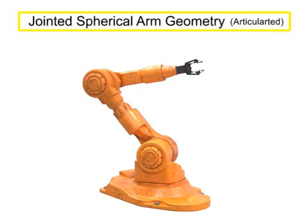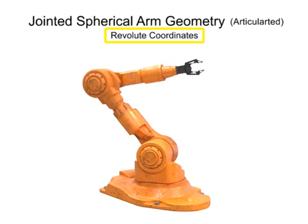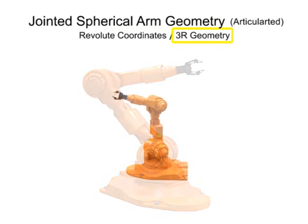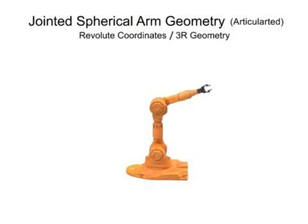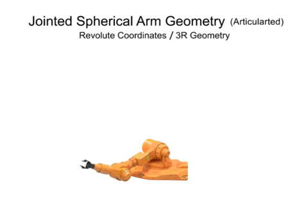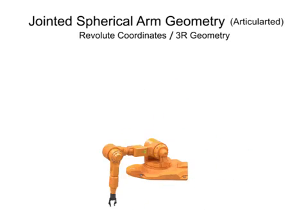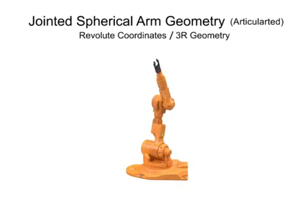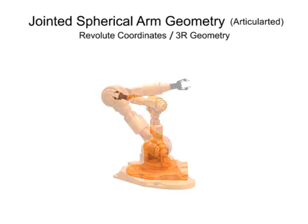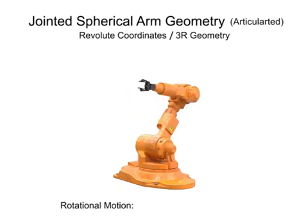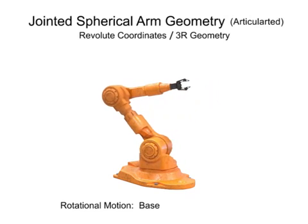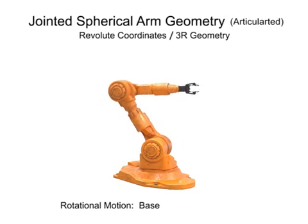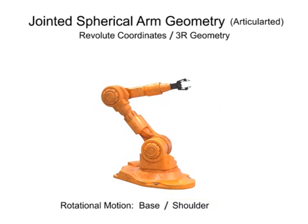Jointed spherical arm geometry robots have rotation in three directions, use revolute coordinates, and are given the designation of 3R. They are one of the most popular types of robotic arms and most accurately mimic the movement of the human arm. Robotic arms with jointed spherical, or articulated geometry, rotate on at least three axes. Left and right movements are provided by rotation at the base, horizontal movement by rotation at the shoulder, and vertical movement by rotation at the elbow.